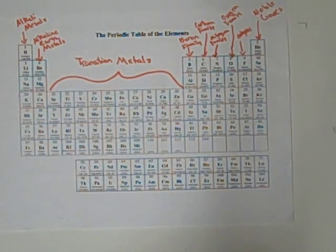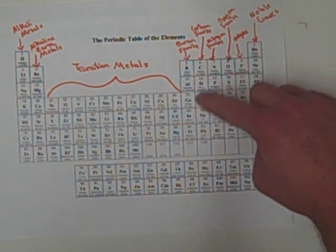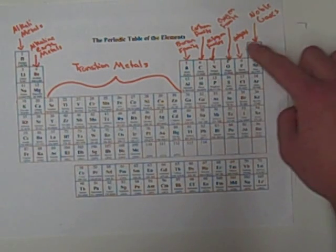Group thirteen is the boron family. It consists of one metalloid and four metals. Group fourteen is known as the carbon family. Fifteen is the nitrogen family. Group sixteen is the oxygen family. Group seventeen is called halogens. Group eighteen is the noble gases.